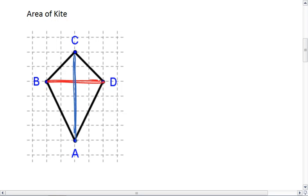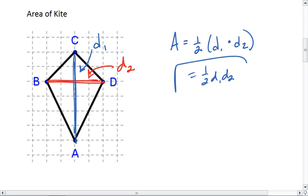I'm drawing what are called the diagonals of my kite. I'll label the blue one D1 and the red D2. What I find then is that the area of my kite is one-half D1 times D2, which we can just write as one-half D1 and D2. Now let's explore why.